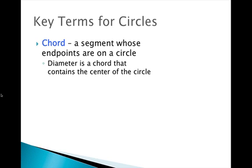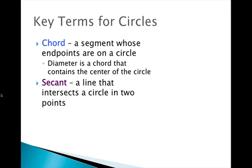The first term is a chord. A chord is a segment whose endpoints are on a circle. You've seen diameters before. A diameter is a special type of chord in the fact that it contains the center of a circle. By definition the chord is a segment, whereas a secant is a line.